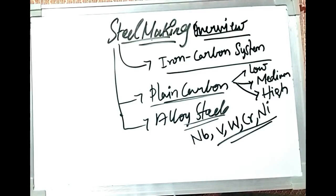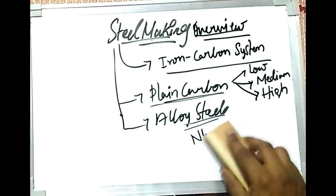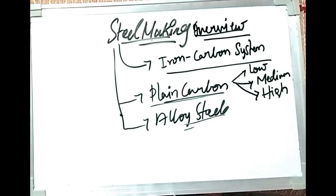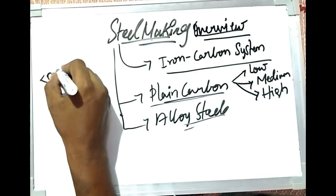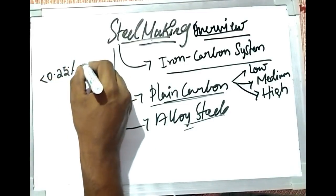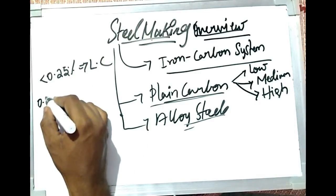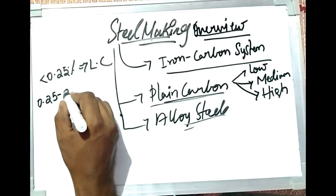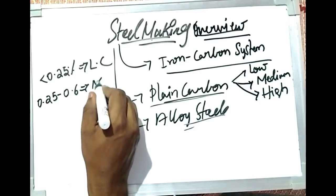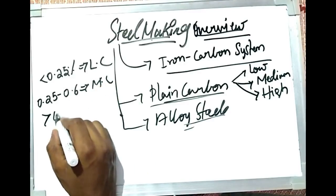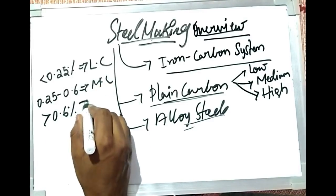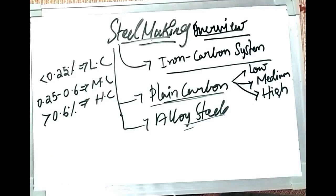In low carbon steel the carbon content is less than 0.25%. If the carbon content is between 0.25% to 0.6% then it is medium carbon steel. Similarly if it is greater than 0.6% it is called high carbon steel. Depending on the carbon percentage, the steel properties vary a lot.